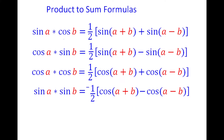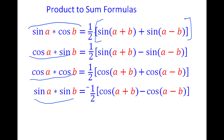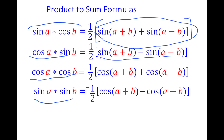The formulas we are going to be using are here. We have sine a times cosine b, which equals 1/2 times sine(a+b) plus sine(a-b). On the left side we have a combination of sine and cosine. We also have cosine times sine, cosine times cosine, and sine times sine. On the right side we have either just sines or just cosines.